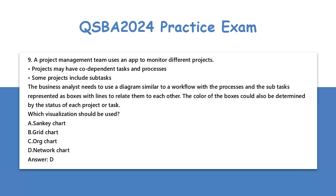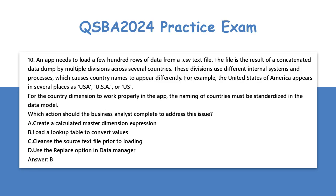Question 10: An app needs to load a few hundred rows of data from a .csv text file, which is the result of a concatenated data dump by multiple divisions across several countries. These divisions use different internal systems and processes, which causes country names to appear differently — for example, the United States of America appears as USA, USA, or US. For the country dimension to work properly in the app, the naming of countries must be standardized in the data model. Which action should the business analyst complete to address this issue?